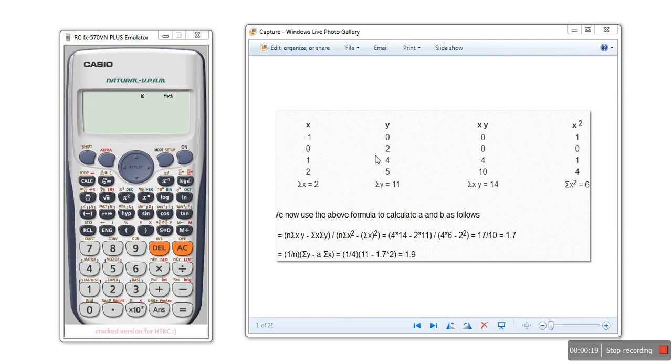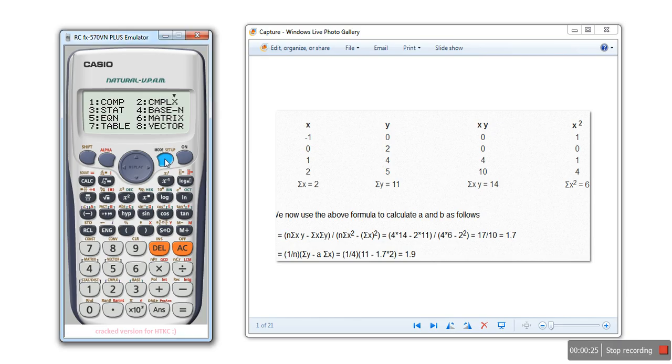First of all, in your calculator you need to set mode. Press the mode button and then press key 3 to select stat mode. Here we want to solve a regression problem, so we will go for the second option by pressing key 2.